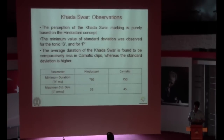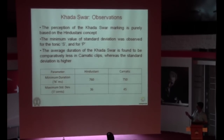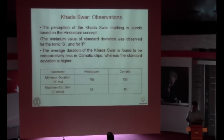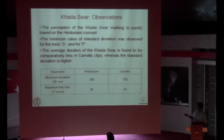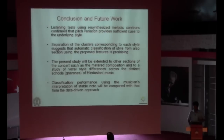The minimum value of standard deviation was obtained for the tonic swara as expected musicologically, and results were similar for the fifth note Pa. The average duration of khada swar is comparatively less in Carnatic clips whereas the standard deviation is higher. The table shows the range extents for our N and J parameters: minimum duration N is found as 760 ms for Hindustani and 750 ms for Carnatic; standard deviation J maximum value is 36 for Hindustani and 45 for Carnatic. The higher standard deviation in some Carnatic cases is because in Raga Jayajayvanti, the swara Re has andolan with komal Ga, causing the boundary to include some of that movement.